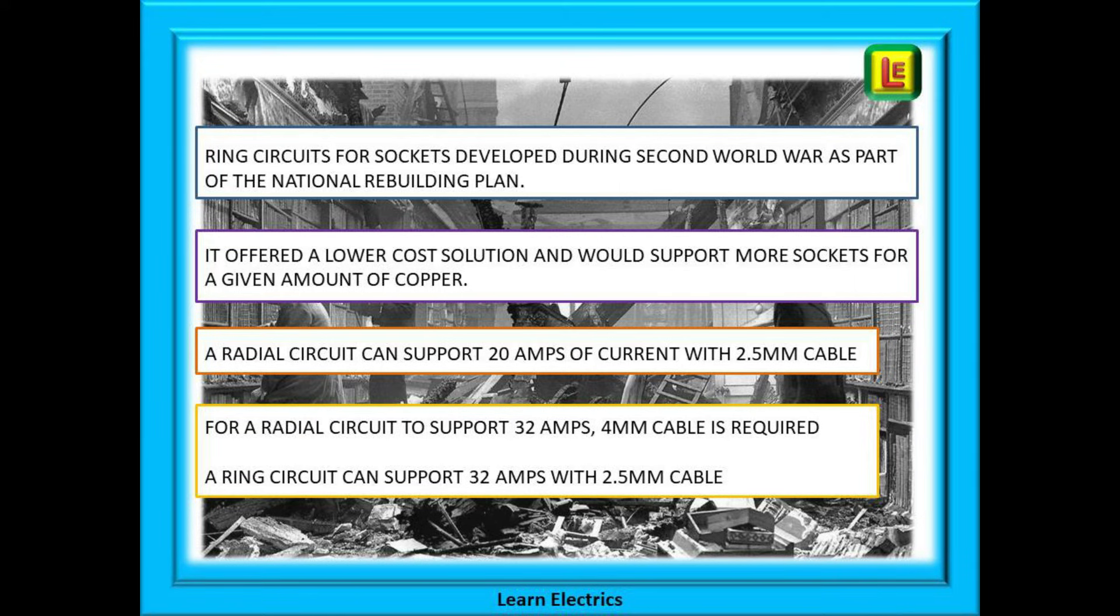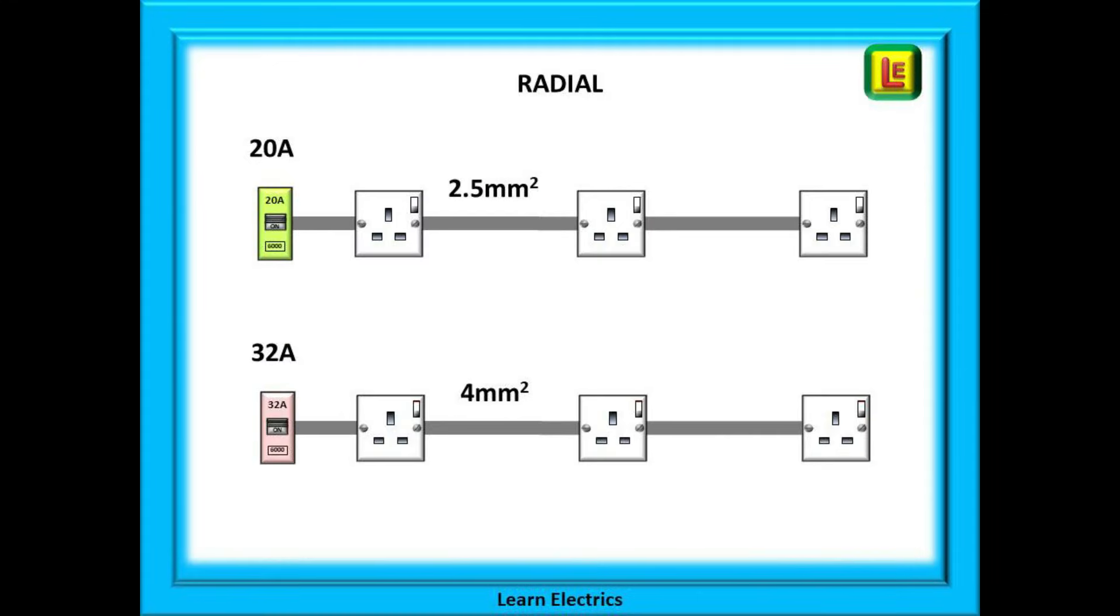Let's look at this in stages. Look at these two examples of a radial circuit. The top one is protected by a 20 amp breaker and uses 2.5 millimeter cable. The bottom circuit has a 32 amp breaker and must be wired in 4 millimeter cable. As we said, more copper.